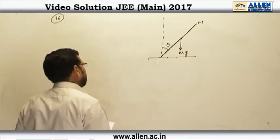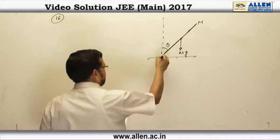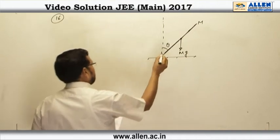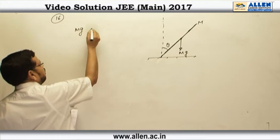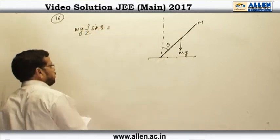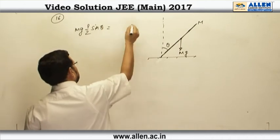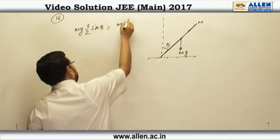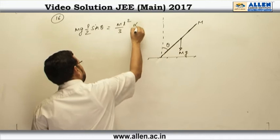So, it is very basic concept we just need to take the torque about an axis passing to this point that will be equal to m g into l by 2 sin theta when the rod makes an angle theta with vertical and this is equal to I alpha and I is going to be m l square by 3 into alpha.